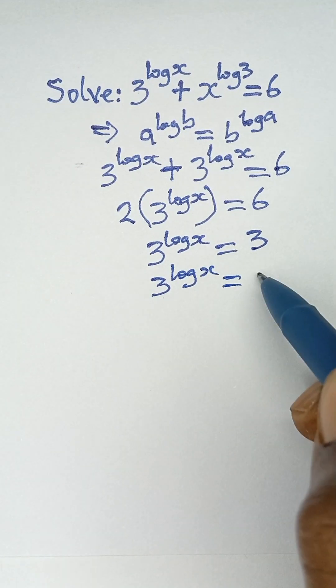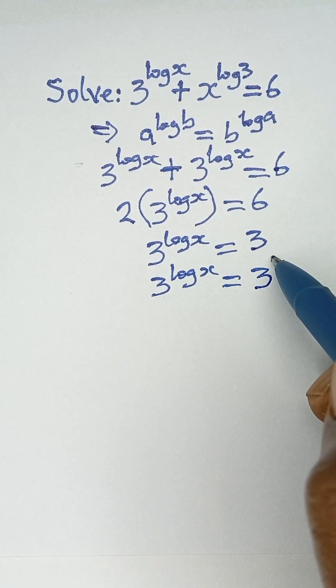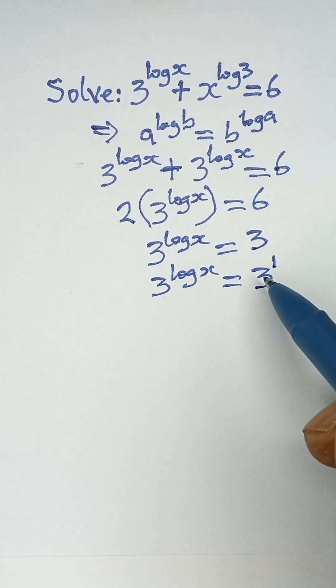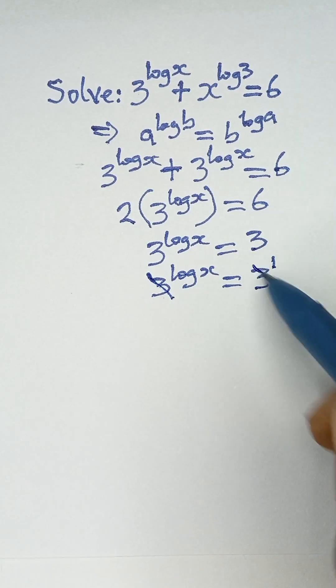3 raised to the power log x equals 3 raised to the power 1, because 3 as a number can be expressed as 3 to the power 1. Now the bases are equal, so we can cancel the bases.